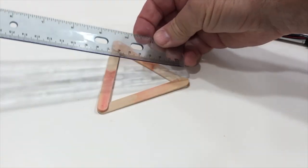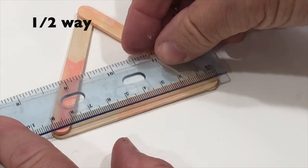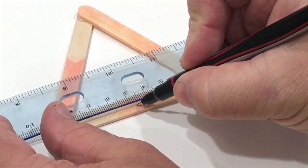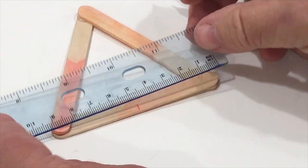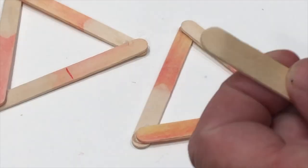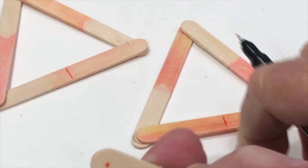Take one of your triangles, and on the bottom we're going to measure halfway across. This is a nine centimeter popsicle stick, so four and a half centimeters we're going to mark. Then take the two loose pieces we cut and mark a little dot right in the middle on the curve there.